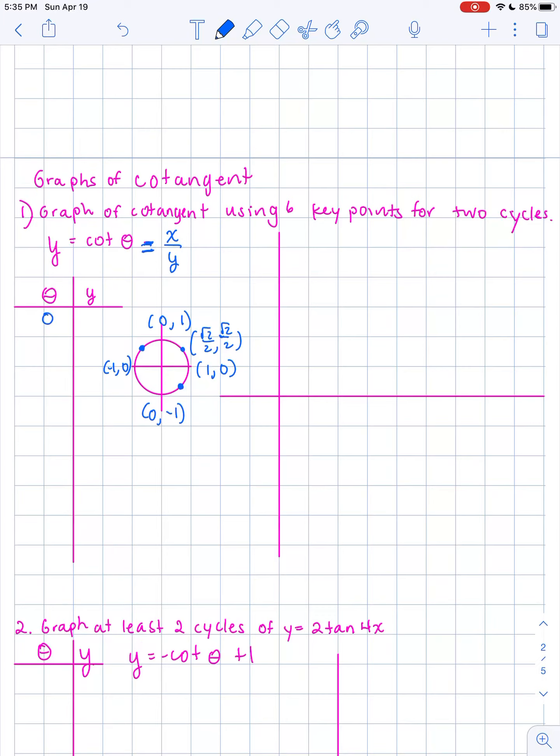So we are going to begin with jumping on our table of values by π over 4. So 0, π over 4, π over 2, 3π over 4. And with tangent, you notice I started at negative π over 2. With cotangent, I'm going to begin at 0. And there's a reason for that.